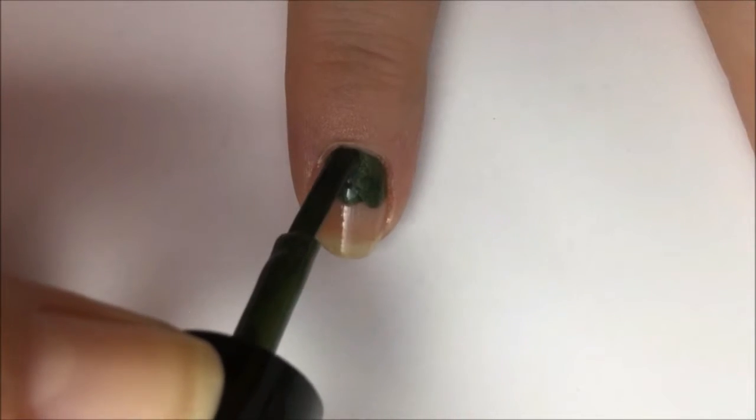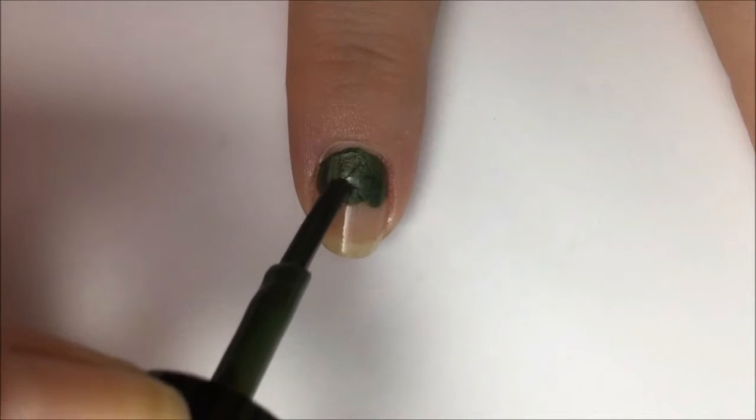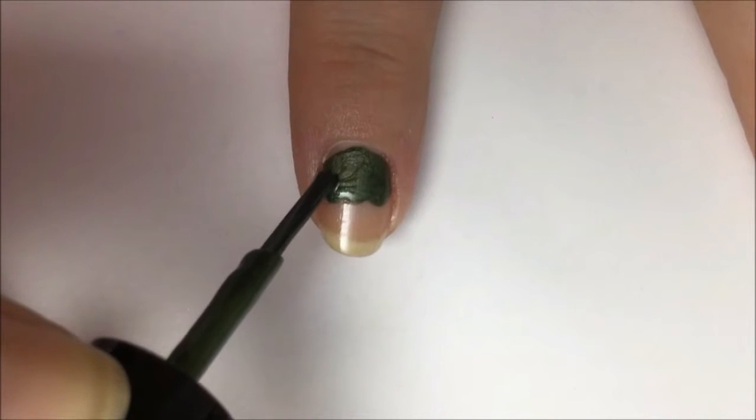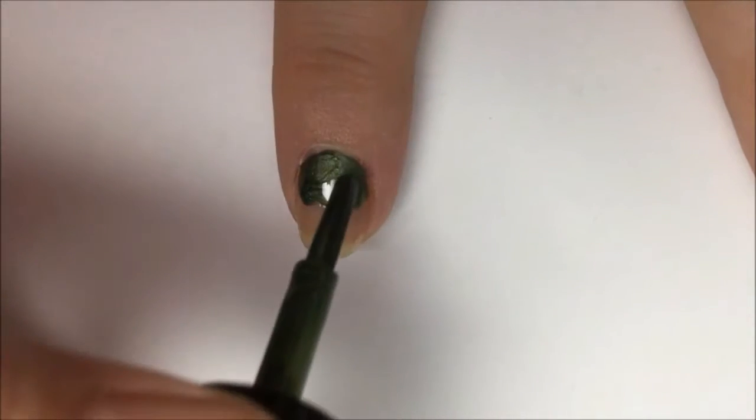Now you're going to paint the top half of your nail the dark shimmery green color. The line halfway down doesn't have to be perfect because we're going to cover up the imperfections, but try to get it as straight as you can.